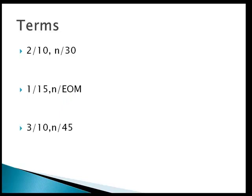Another example might be 1/15 net end of month (EOM). The 1 represents the discount — a 1% discount if paid within 15 days; otherwise the balance is due by the end of the month. A company can create any type of terms they want. Another example would be 3/10 net 45 — 3% discount if paid within 10 days, otherwise the balance is due in full by the 45th day. The idea is to collect early payment and reduce risk of non-payment.